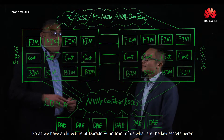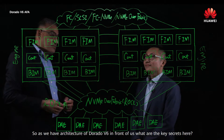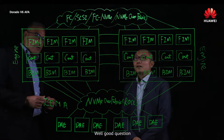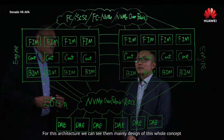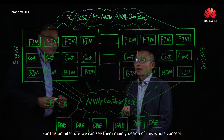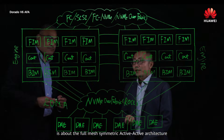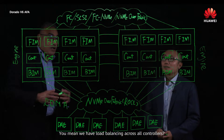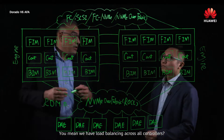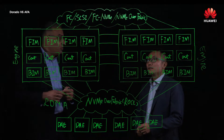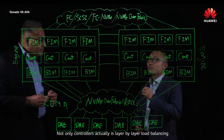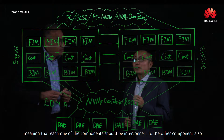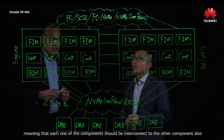As we have the architecture of DRADO V6 in front of us, what are the key secrets here? The main design of this whole concept is the full mesh, symmetric, active-active-active architecture. We have eight controllers, and it's layer-by-layer load balancing, meaning each component is interconnected to every other component.